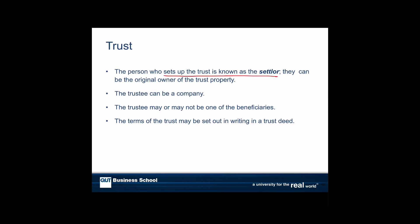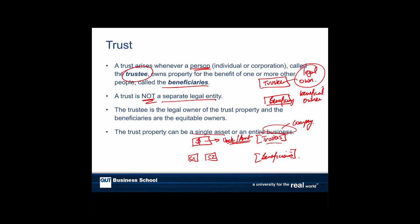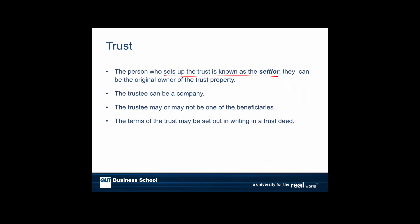The person who sets up the trust is known as the settlor. In our example, the parents who died are the settlors. They put the money in, making the aunt the trustee and the children the beneficiaries — those are the key roles in a trust. The trustee can be a company, and the trustee may or may not be one of the beneficiaries. The terms of the trust are most often set out in a trust deed.